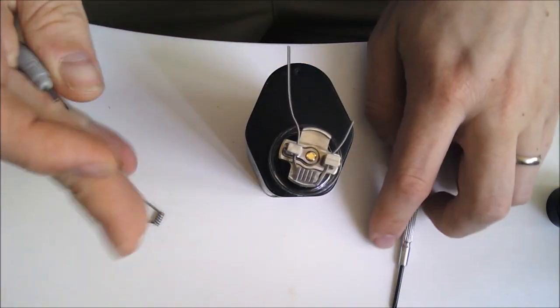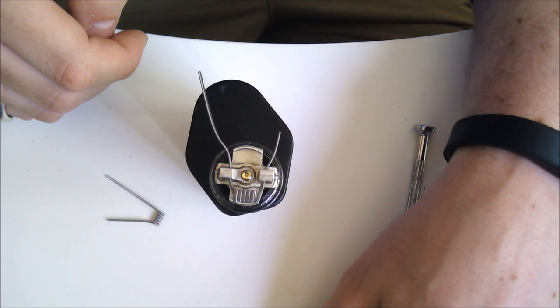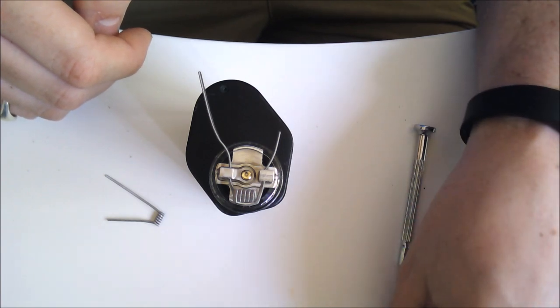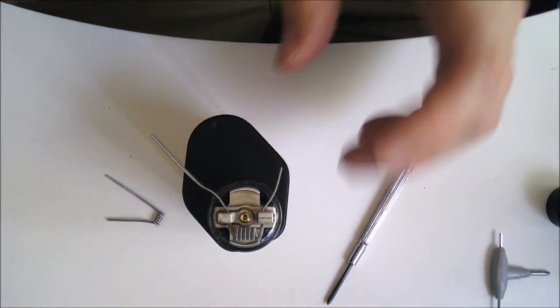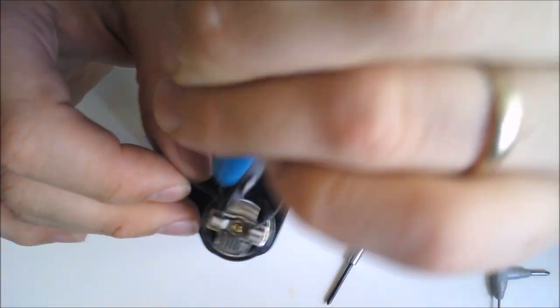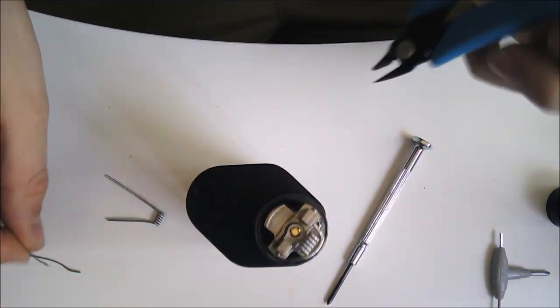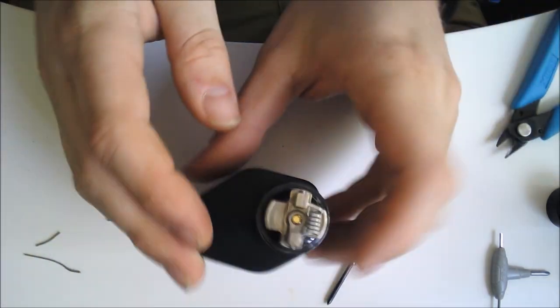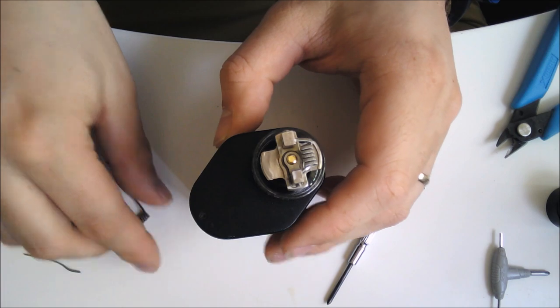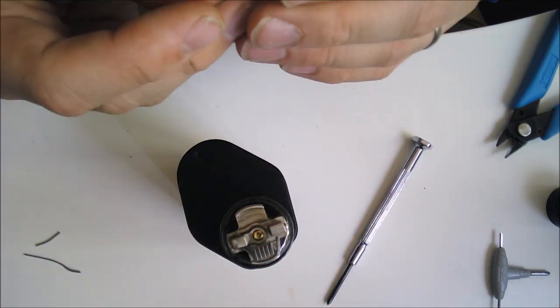There's our installed coil. That's what it should look like. I'm going to tidy that up just a touch. Now we're going to snip our leads, we've got them to where they need to be. That's one coil installed.